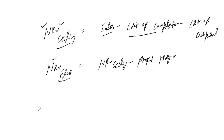The third value needed is CRC, which stands for current replacement cost. CRC will also be given in the question. Once you have these three values — NRV ceiling, NRV floor, and CRC — you can easily calculate the market.